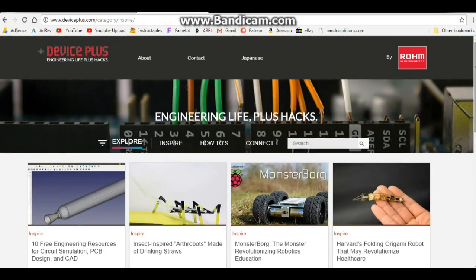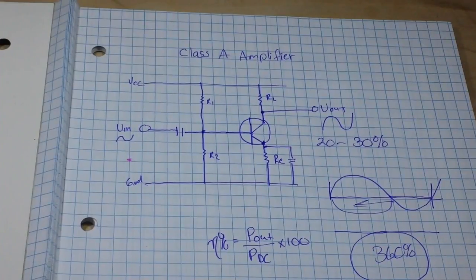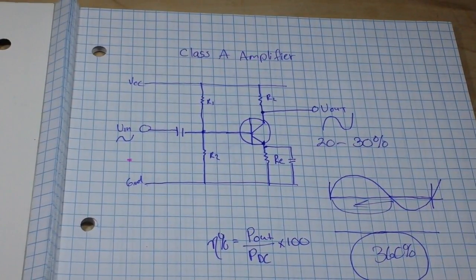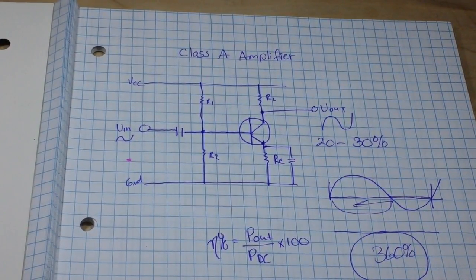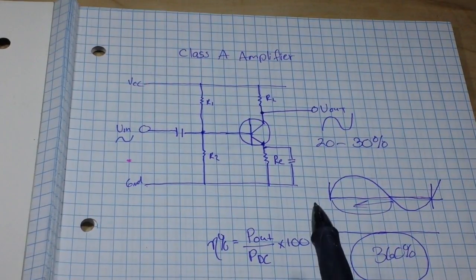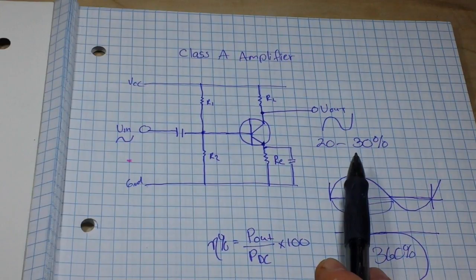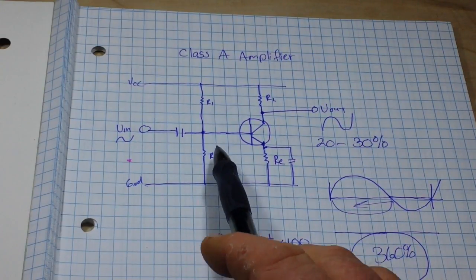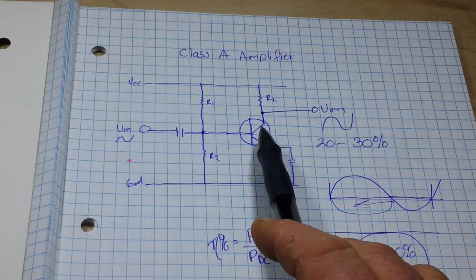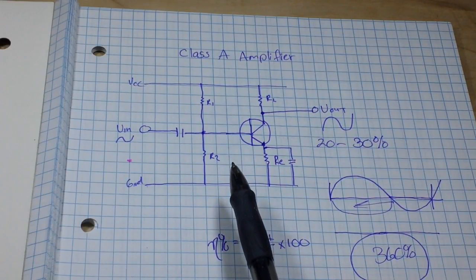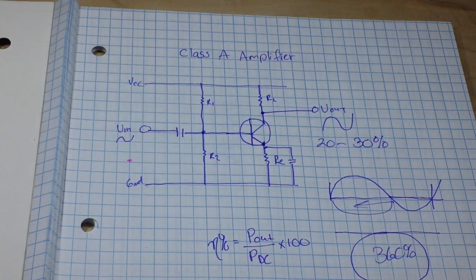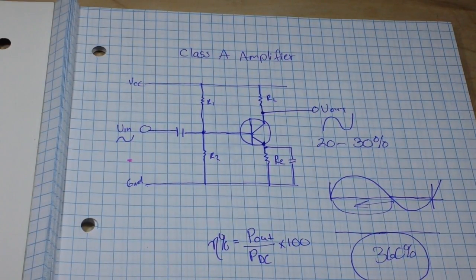Alright, last time we talked about the Class A amplifier, which has an incredibly high gain but a rather low efficiency because we're always biasing the amplifier on. It's always on, it's always using power.